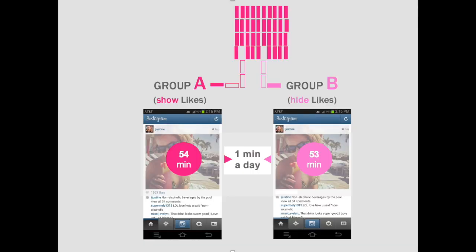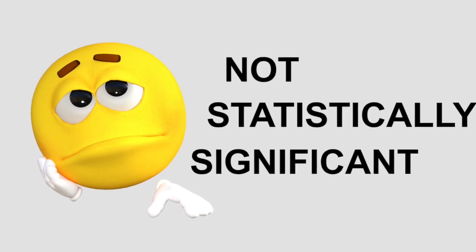Users in group A spent 54 minutes on average, and users in group B clocked in at 53 minutes. So group B underperformed group A by one minute per day. The statisticians reported that the difference between group A and group B in terms of total time spent on site is not statistically significant. A different way of saying the same thing is that it's a statistical tie — showing or hiding the likes count does not make a difference.